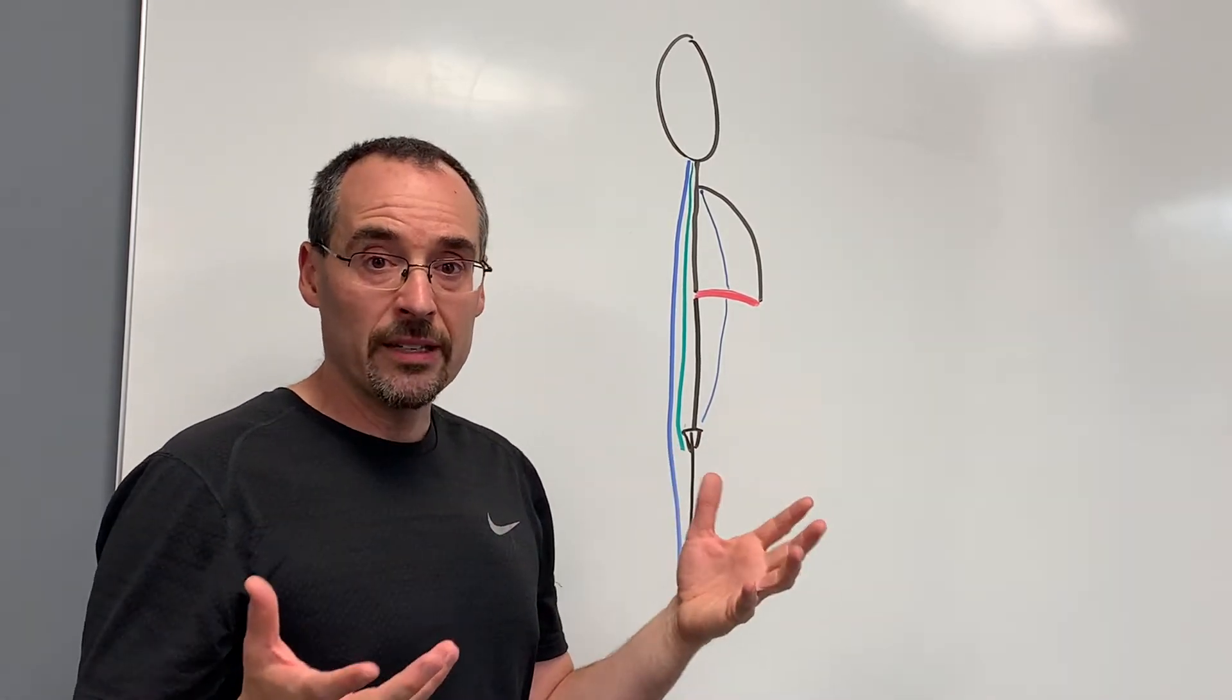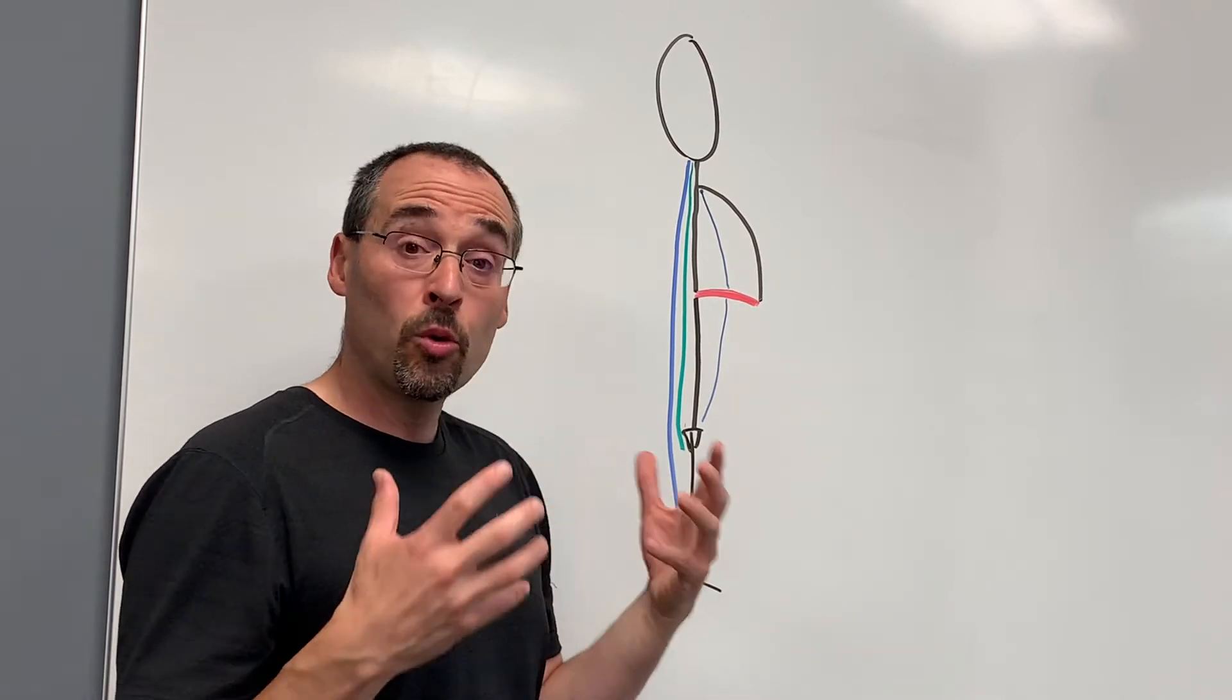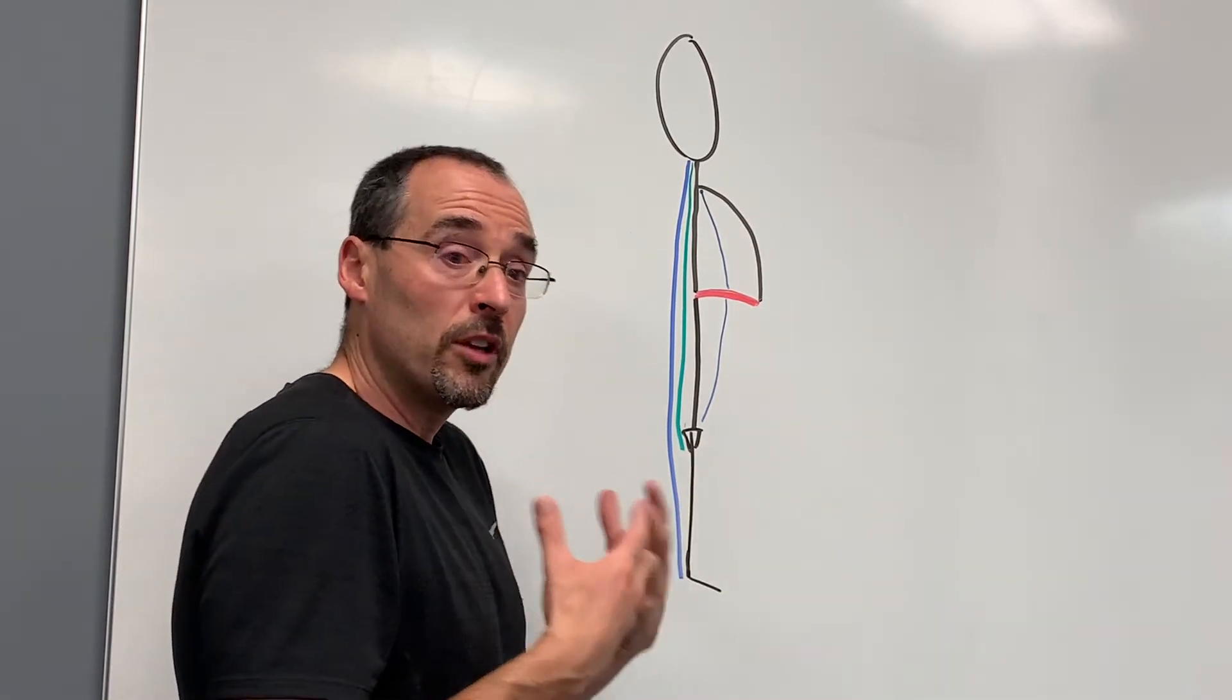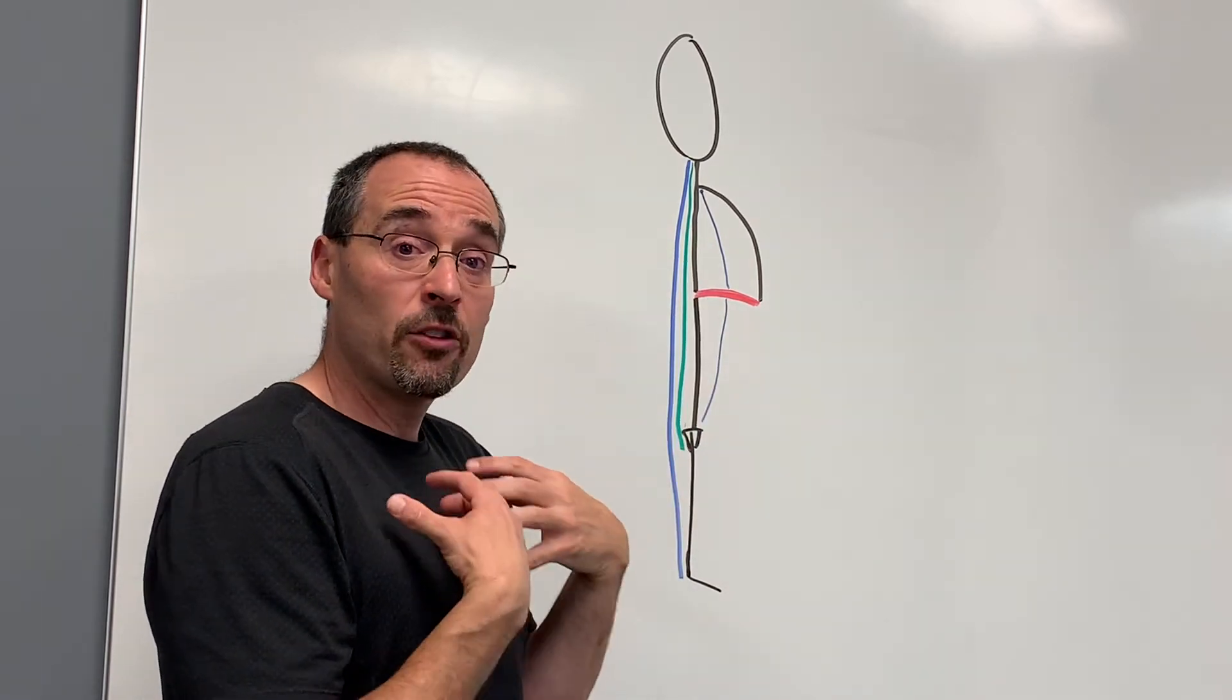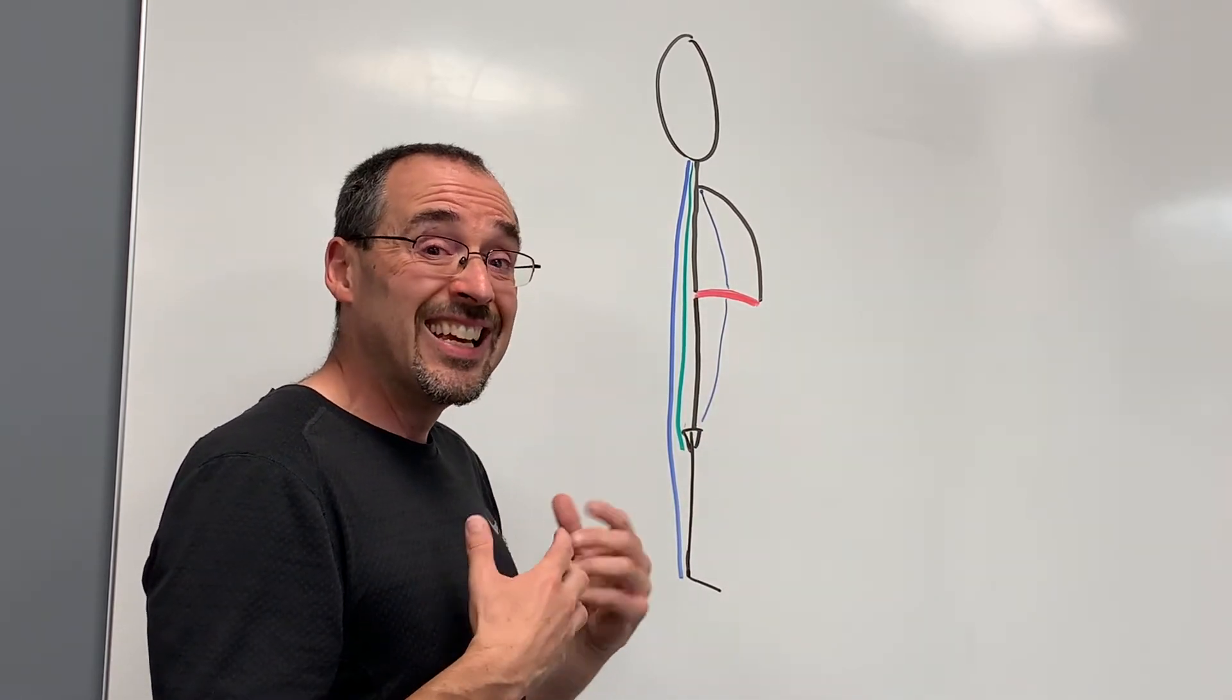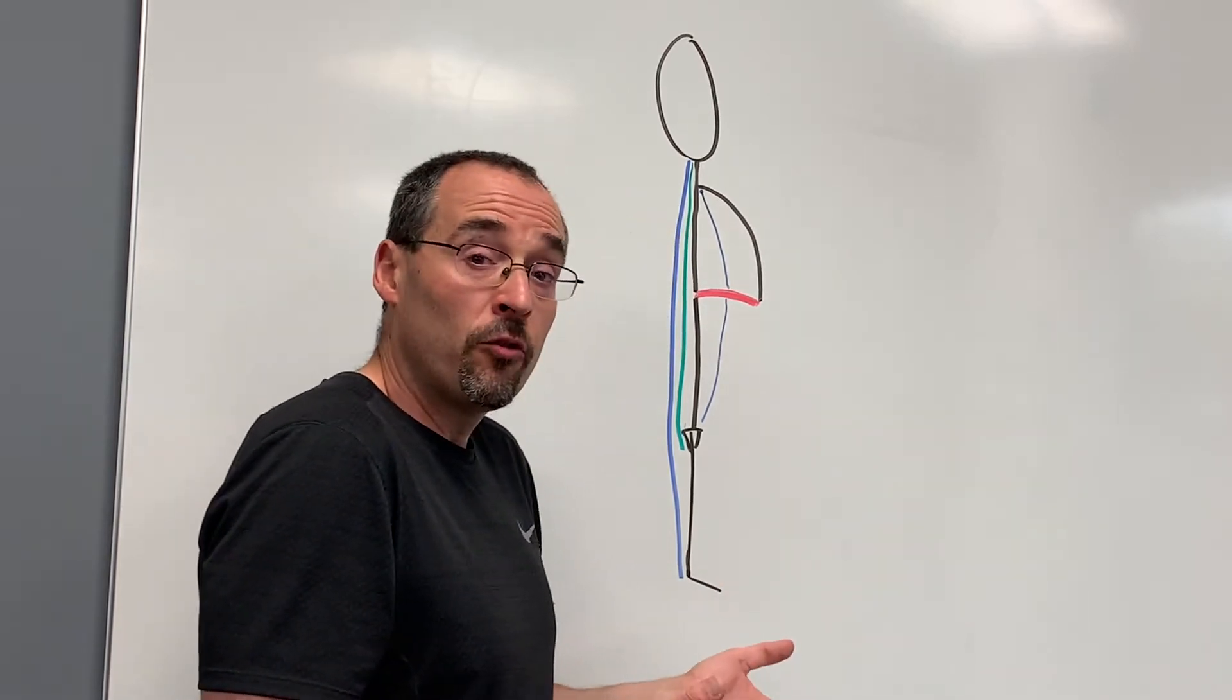But one of the big problems is gravity. So gravity is quite a big force that tends to pull us forward, particularly because of the way our spine is shaped and the force generated by the anterior fascial lines. It's actually easy to be bent forward.